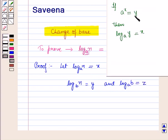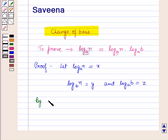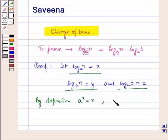Using the definition of logarithm — that is, if A raised to power X equals Y, then in logarithmic form we write log Y to the base A equals X — and applying this definition to our three equations: for the first equation, A raised to power X equals N; for the second equation, B raised to power Y equals N; and for the third equation, A raised to power Z equals B.